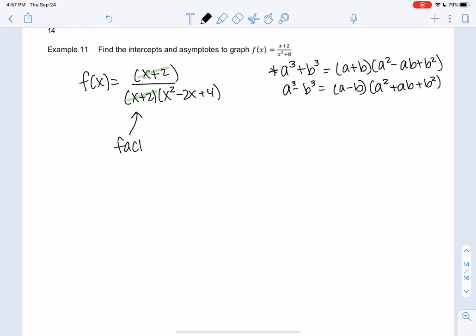So when a factor cancels out, it creates a hole. And that's because negative 2 is not in the domain of f of x, but it'll be in the domain of this new simplified function.